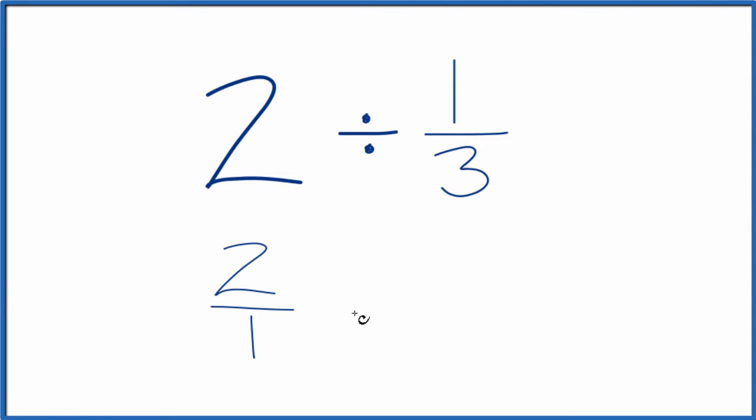And instead of division, we're going to multiply by the reciprocal of one-third. To get the reciprocal for one-third, we move the numerator to the bottom, denominator to the top. So we'll end up having three over one.